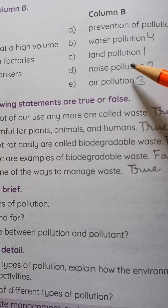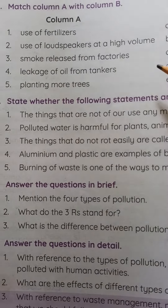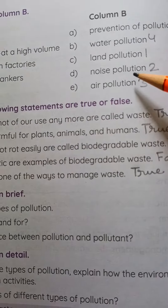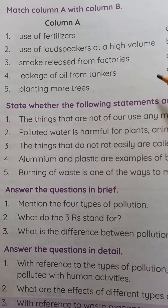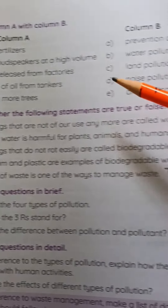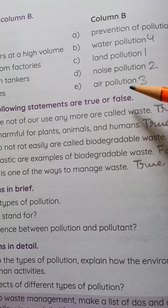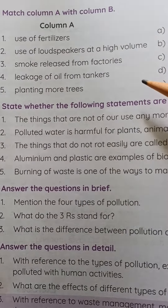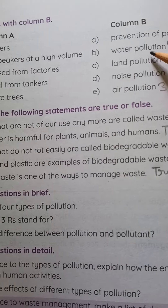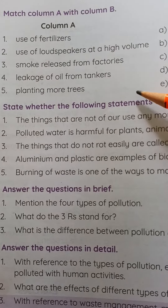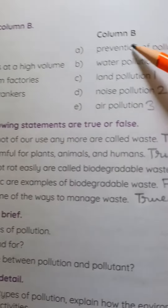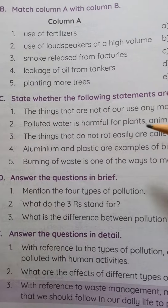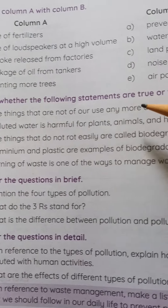Answers: Number one — use of fertilizers: c, land pollution. Number two — use of loudspeakers at a high volume: d, noise pollution. Number three — smoke released from factories: e, air pollution. Number four — leakage of oil from tankers: b, water pollution. Number five — planting more trees: a, prevention of pollution.